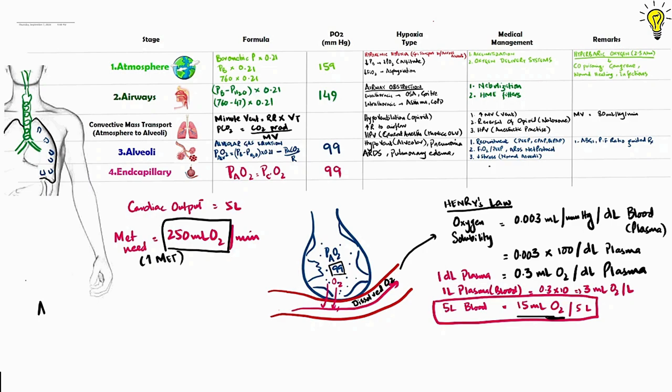The total arterial oxygen content is dissolved oxygen plus oxygen carried by hemoglobin, which actually contributes 97% to the total amount. And this is our topic for next episode, the oxyhemoglobin dissociation curve.